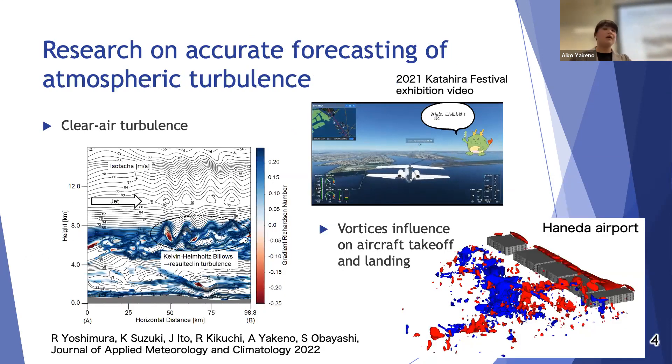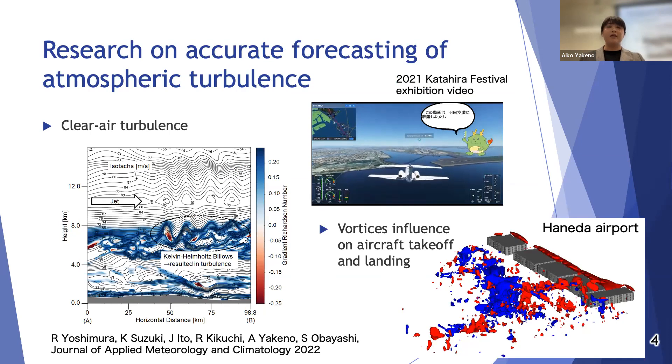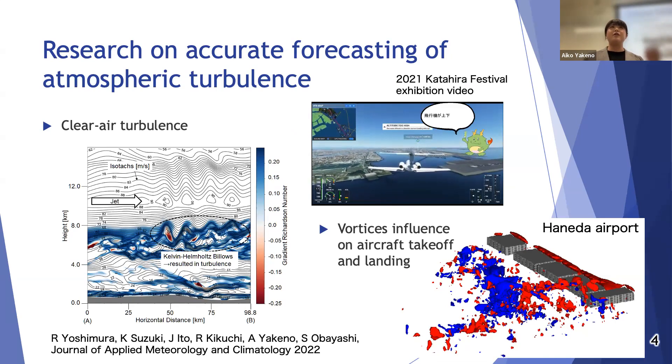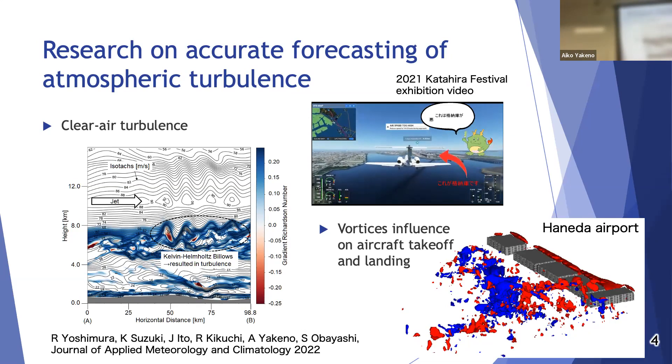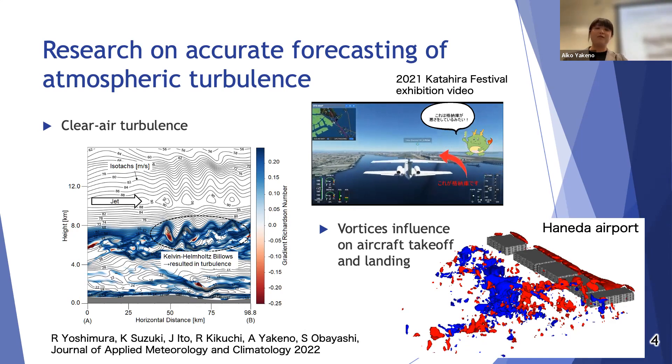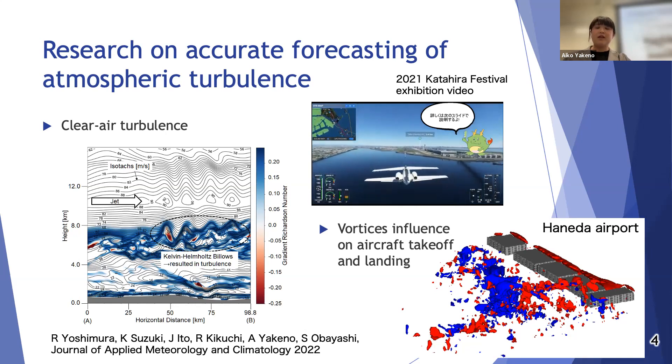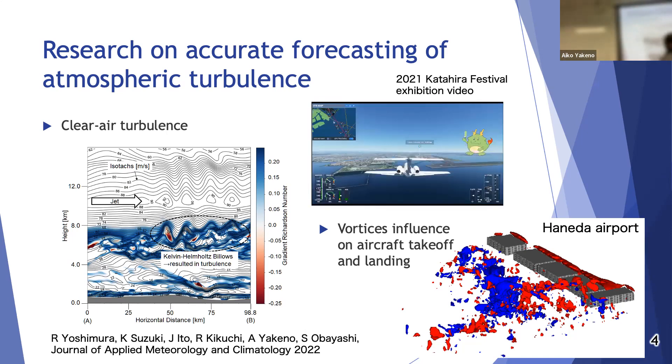Additionally, we are also doing research on accurate forecasting of atmospheric turbulence. This is one example to reproduce the airplane shaking dangerous air turbulence. This is used for an open campus event. This is a flight simulator at the open campus event in Tohoku University. This movie demonstrates the airplane shaking due to the equatorial air turbulence. And also this vortex visualization.